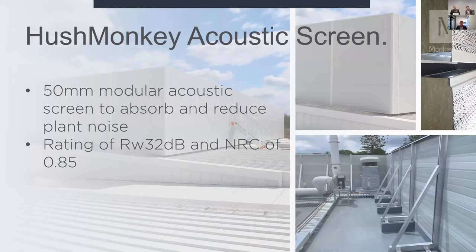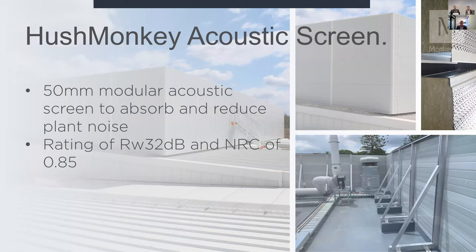Hush Monkey is our solution for acoustic screening, which not only blocks and hides the unsightly plant on the roof but also provides acoustic attenuation properties. It uses the same support structure as the louvre screening, with our Hush Monkey 50mm modular sandwich panel attached to the face. It blocks 32 decibels of sound that hits it, and has a noise reduction coefficient of 0.85, absorbing 85% of sound that hits it. It comes standard in surf mist colour but can be done in pretty much any colour. It can be integrated into the platform or provided as a standalone screen mounted to plinths or a concrete roof.